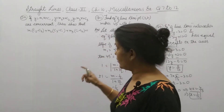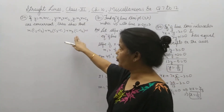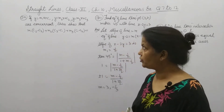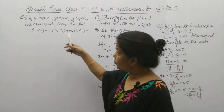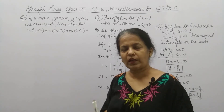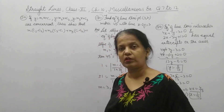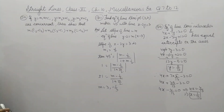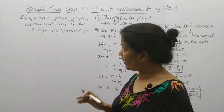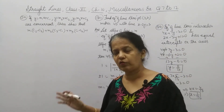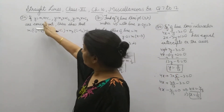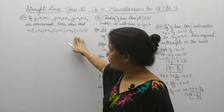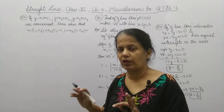In question 10, it is given that if these three lines are concurrent, then show a given result. Concurrent means all the lines pass through one point — the point of intersection of all lines is the same. One way to solve it: take two of the equations to get the value of X and Y, then substitute that value into equation 3. This method is a bit lengthy.